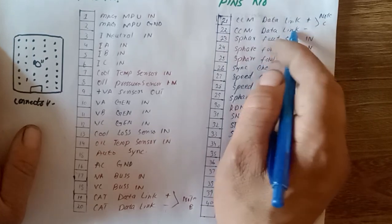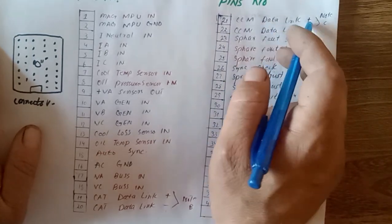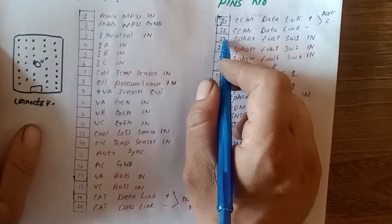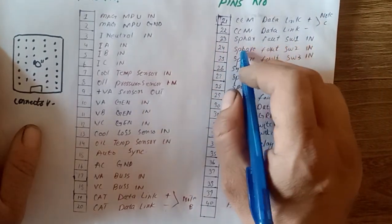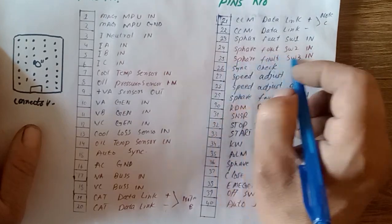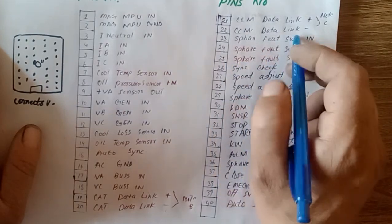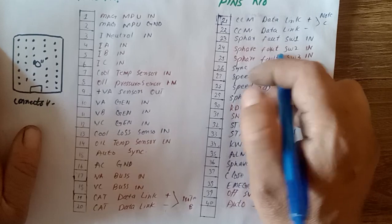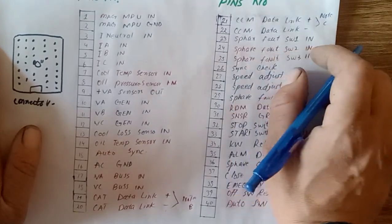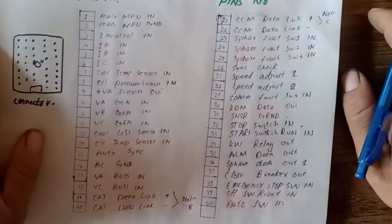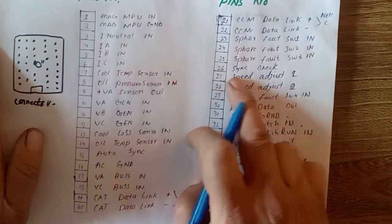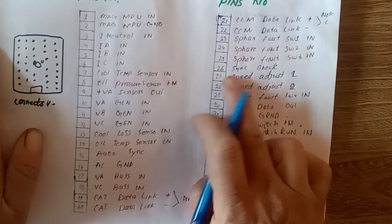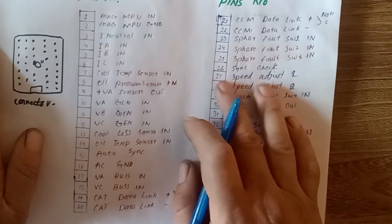Pin 23 is spare fault switch IN - three spare fault switches you can use for any purpose. Pin 26 is synchronization check - this module controller checks the synchronization automatically.